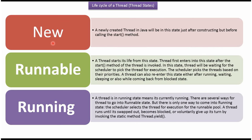A newly created thread will be in new state. Runnable state — thread starts its life from this state. Thread first enters into this state after the start method of the thread is invoked. In this state, the thread will be waiting for the scheduler to pick the thread for execution. The scheduler picks the thread based on their priorities.